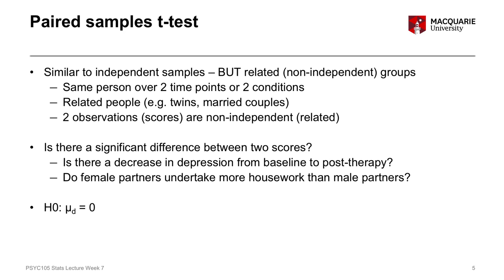The null hypothesis for our paired samples t-test is that the population average difference score is equal to zero — where mu (μ) represents the population mean, and the subscript d represents the difference score, which is the difference between score 1 and score 2 in each pair. If the average difference equals zero, there's no difference between the two sets of scores. The alternate hypothesis is just the opposite: the average population difference score is not equal to zero — it's either positive or negative, but not zero.